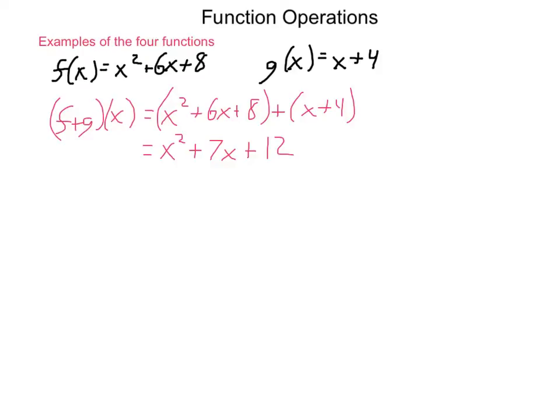Now let's do subtraction. f minus g of x. This means we're going to take our f of x equation, so x squared plus 6x plus 8, and we're going to subtract x plus 4. Going through and combining like terms, we have x squared. 6x minus x becomes a positive 5x. And then 8 minus 4 gives us plus 4. So f of x minus g of x is x squared plus 5x plus 4.